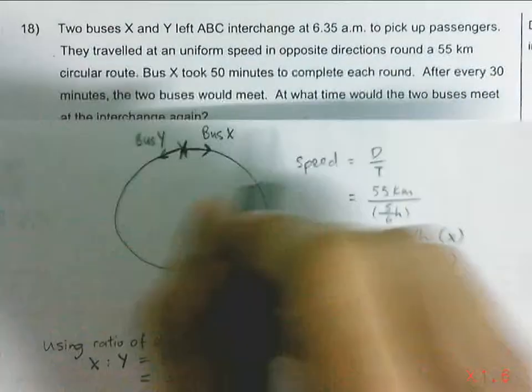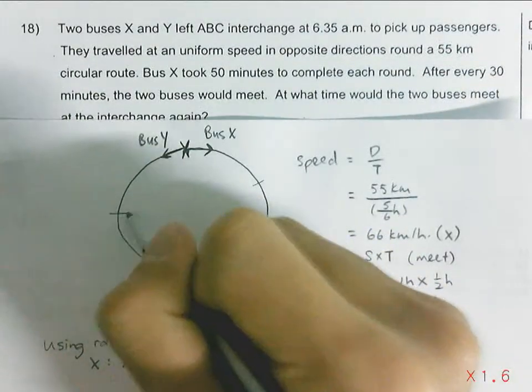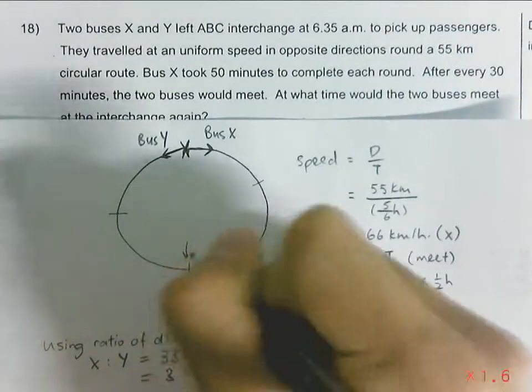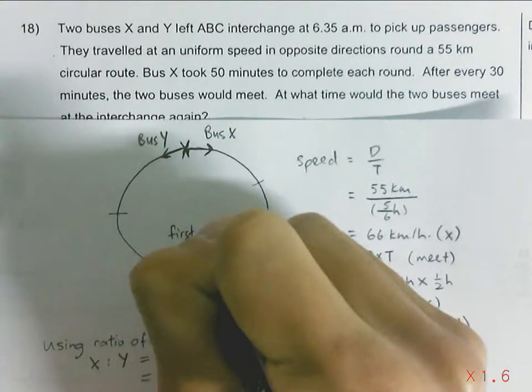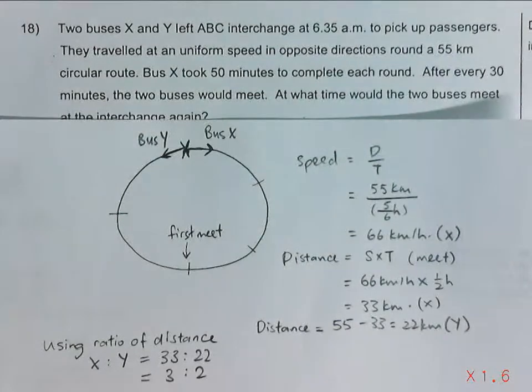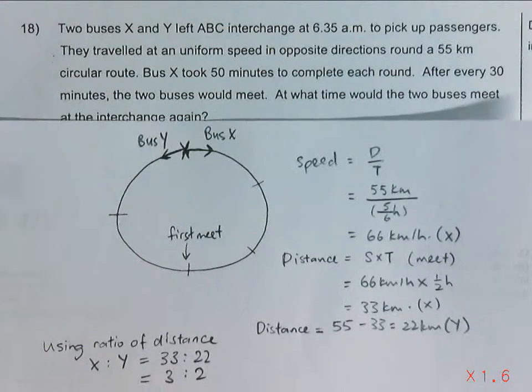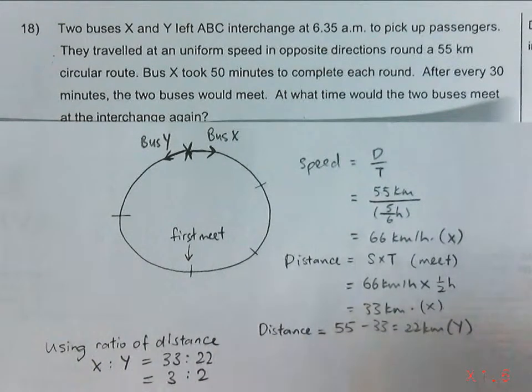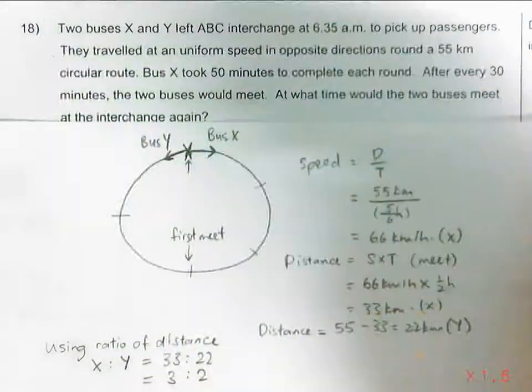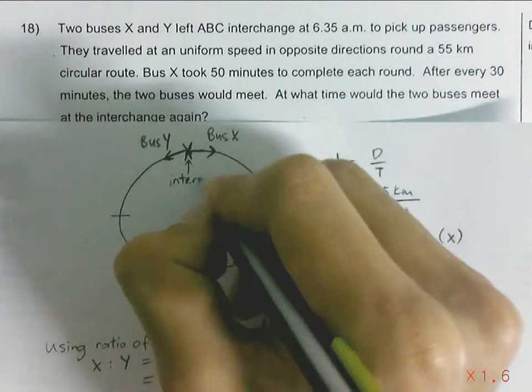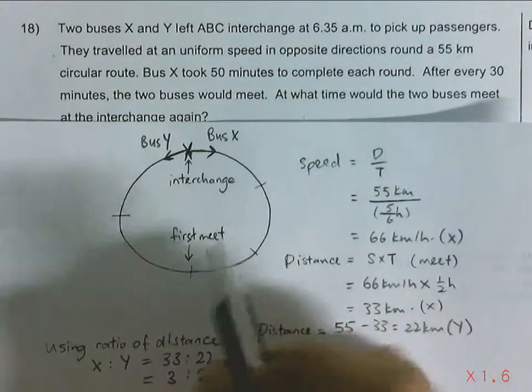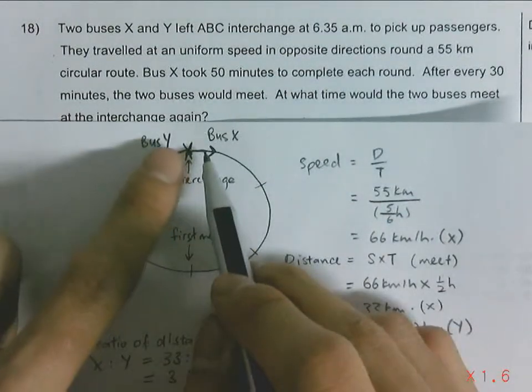So this will be their first meeting point. Would both buses meet at the interchange again, which is here? So this is the interchange. Now if we follow the track of the route, we can actually do it slowly, one turn by one turn.